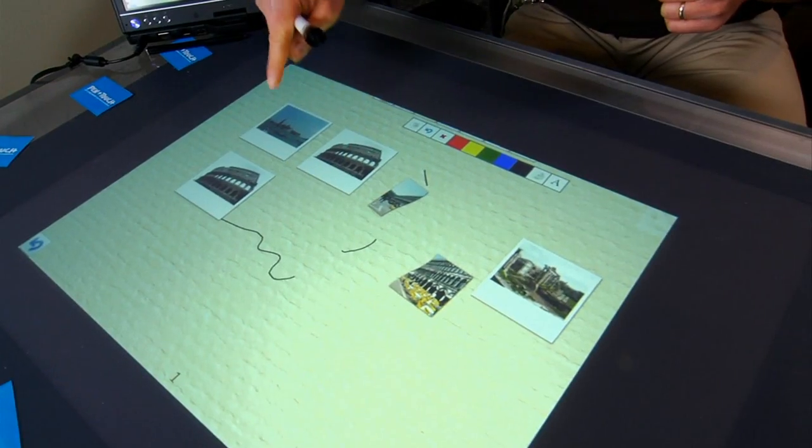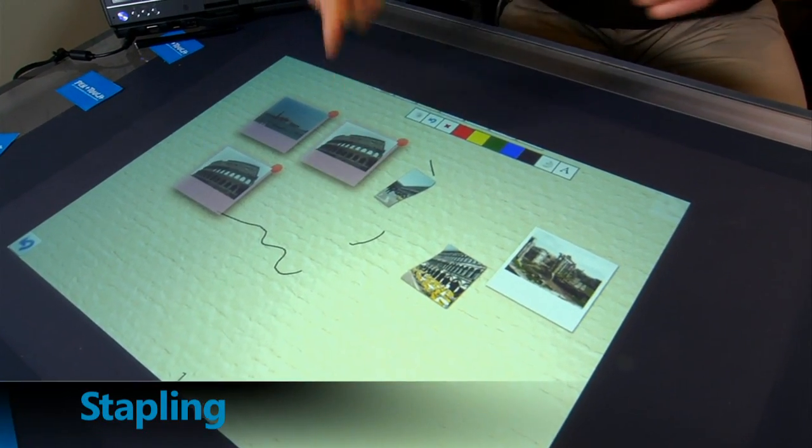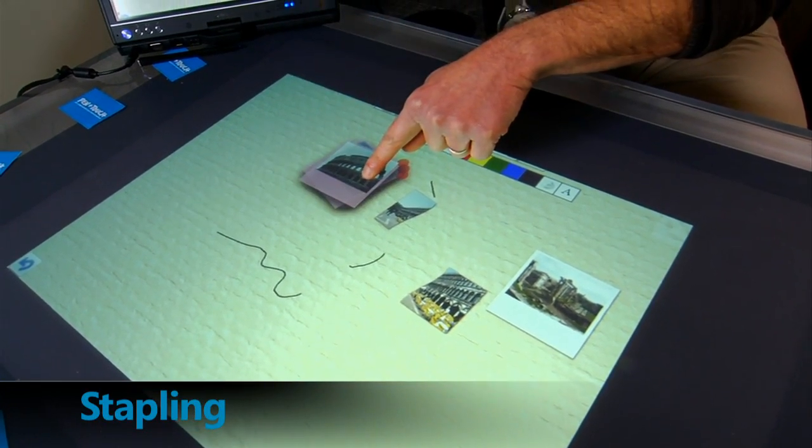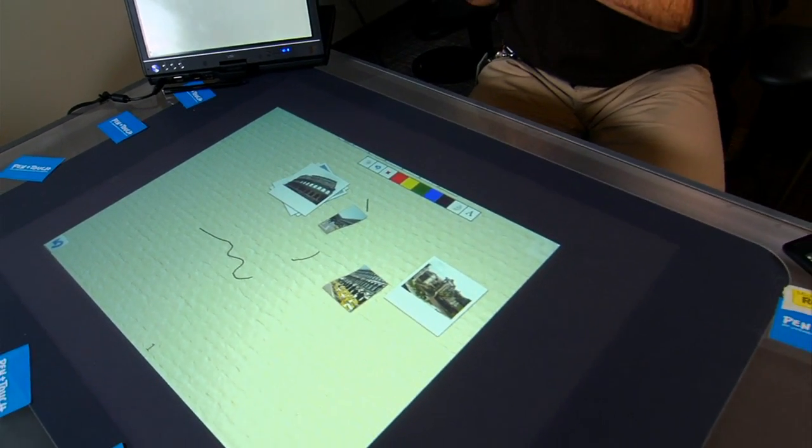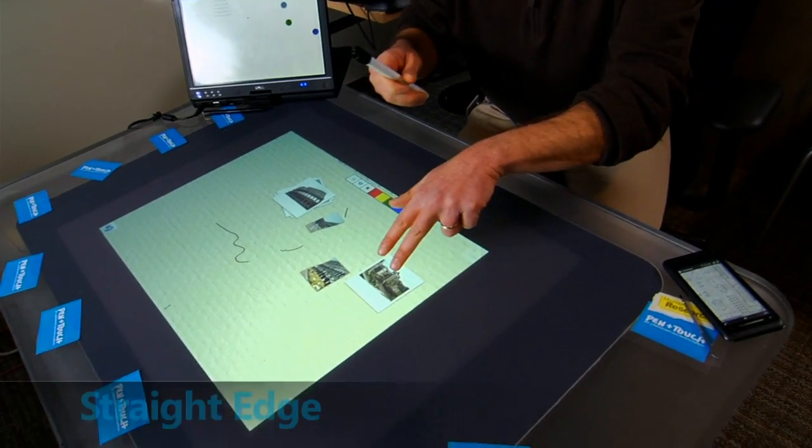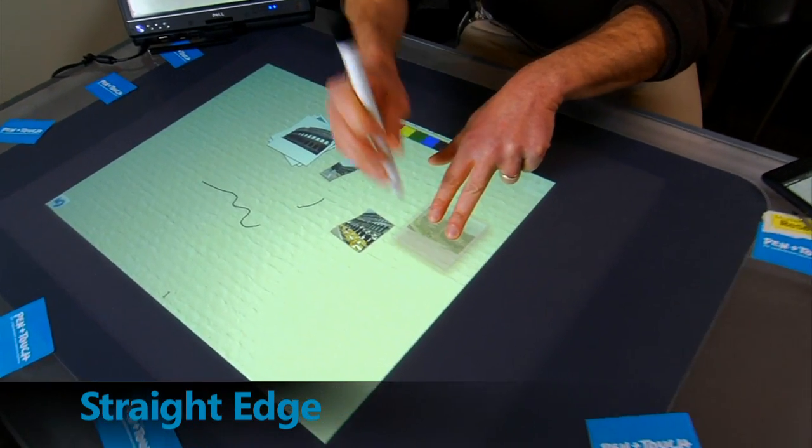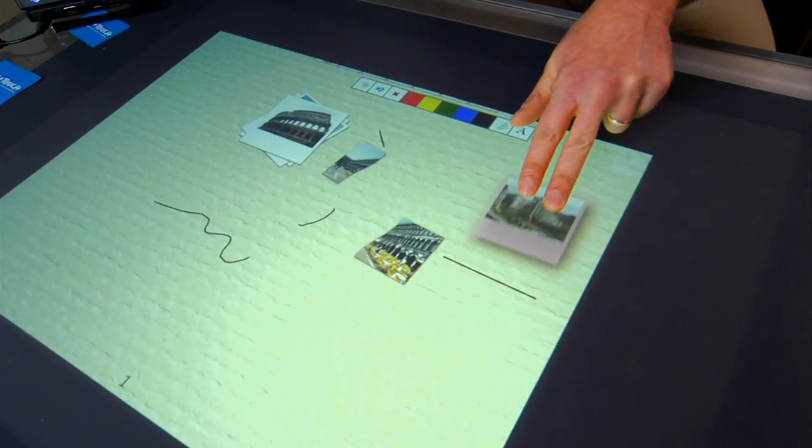I can also convert the pen into a stapler. If I select several objects and then tap with the pen, it creates a pile of those objects. I can also create a straight edge by holding the object with two fingers and then crossing with my pen.